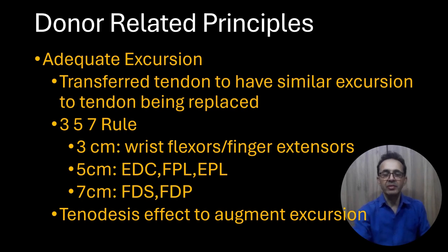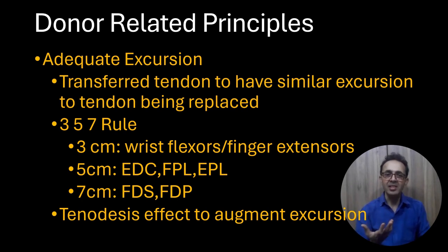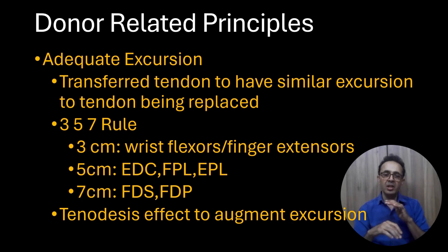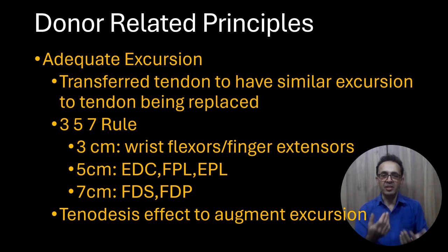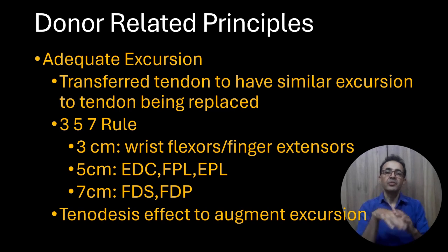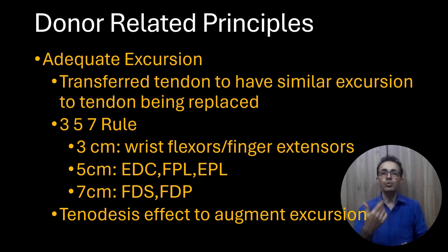In some instances, the available donor MTU may not have adequate excursion. In these cases, we can use the tenodesis effect. For example, if we have planned a tendon transfer for finger extension but the donor MTU lacks sufficient excursion, we can supplement the transfer using the tenodesis effect: flexing the wrist causes the fingers to extend, amplifying the effect of the tendon transfer.